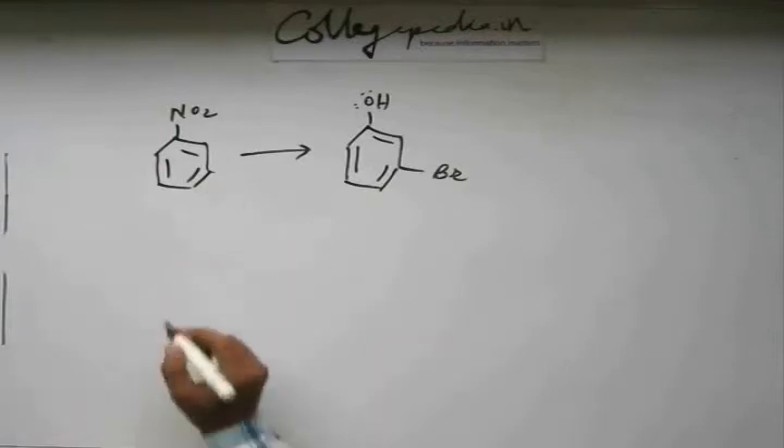So bromine is going to come at meta position. So if we carry out bromination we will have meta-brominated nitrobenzene and from here you have to reach the final product.